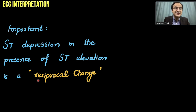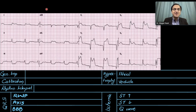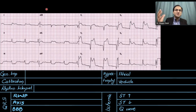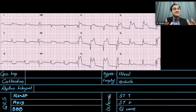We will now solve some ECGs using the six-step ECG interpretation method. We have already discussed all six steps in our previous videos: step one — general impression, step two — calibration, step three — rhythm interpretation, step four — QRS assessment, step five — hypertrophies, and step six — ischemia. We will complete the six-step method today.